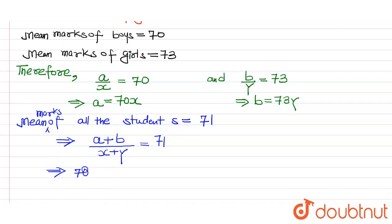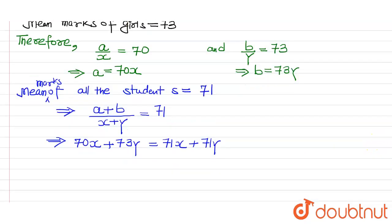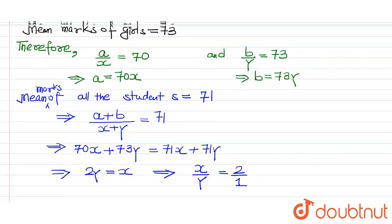So the value of a is 70x, value of b is 73y, equals 71x plus 71y. So we get 2y equals x. So we can write x upon y equals 2 upon 1. That is, the ratio is 2 is to 1.